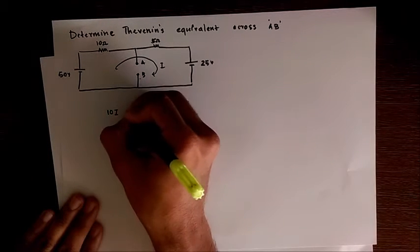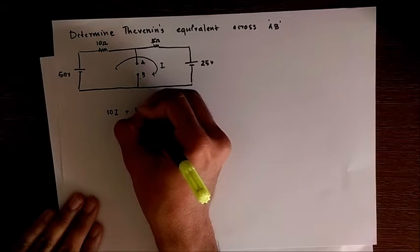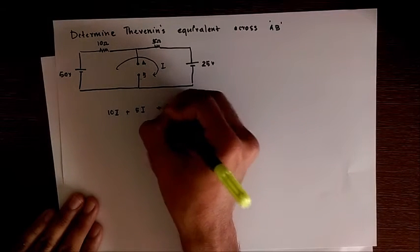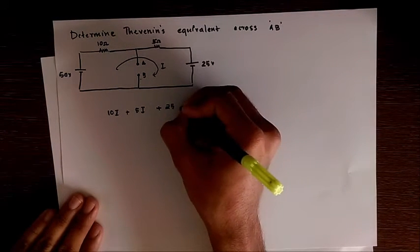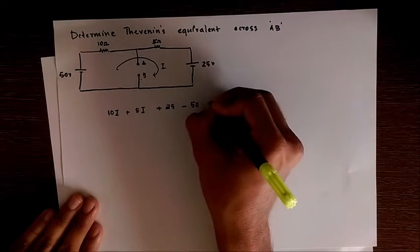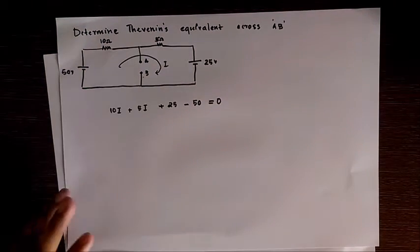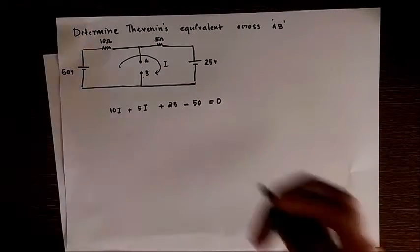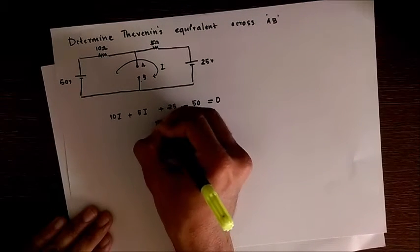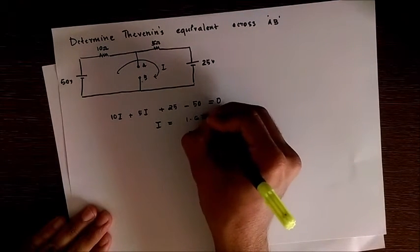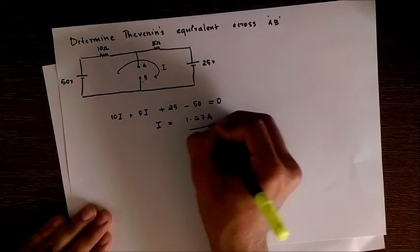Mesh equation: 10I plus 5I plus 25 minus 50 equals 0. So the value of I while solving we get it as 1.67 amperes.